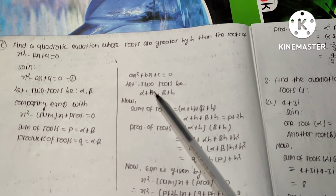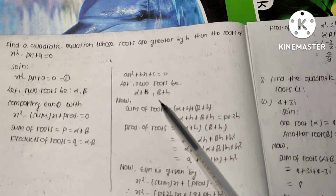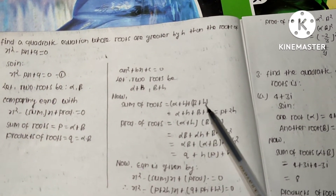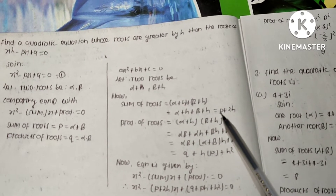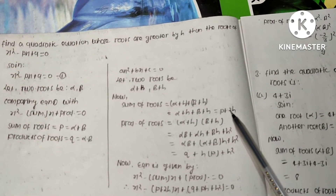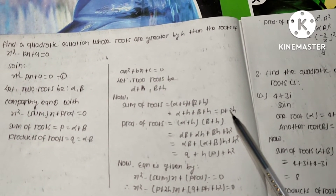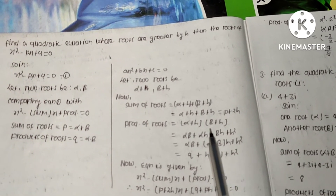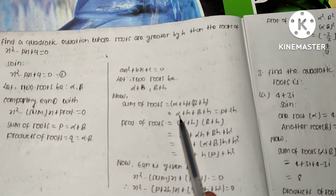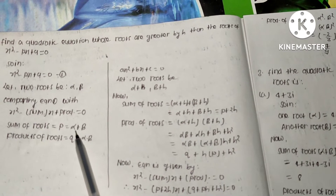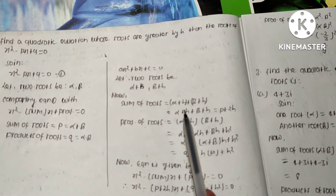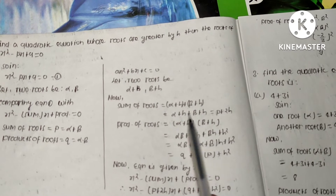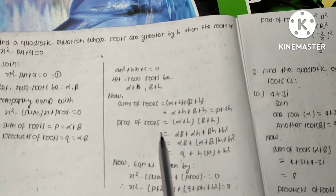The sum of the new roots is (alpha plus h) plus (beta plus h), which gives us alpha plus beta plus 2h. Since alpha plus beta equals p, the sum of the new roots is p plus 2h.